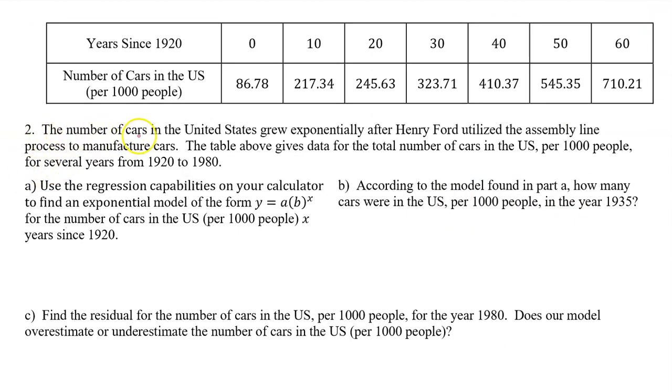Number 2: The number of cars in the United States grew exponentially after Henry Ford utilized the assembly line process to manufacture cars. The table above gives data for the total number of cars in the U.S. per 1,000 people for several years from 1920 to 1980. Part A: